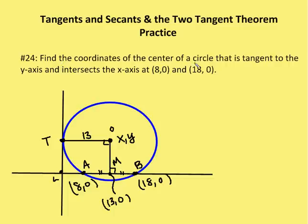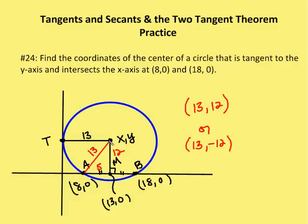So the question is to find the coordinates of the center of the circle that is tangent to the y-axis, intersects the x-axis at 8, 0 and 18, 0. So I know that my x-coordinate now is going to be 13.